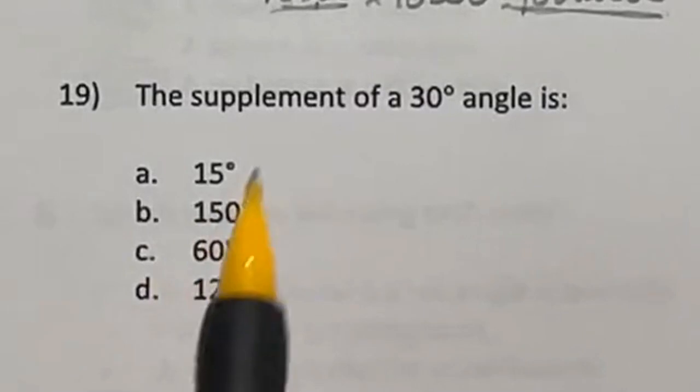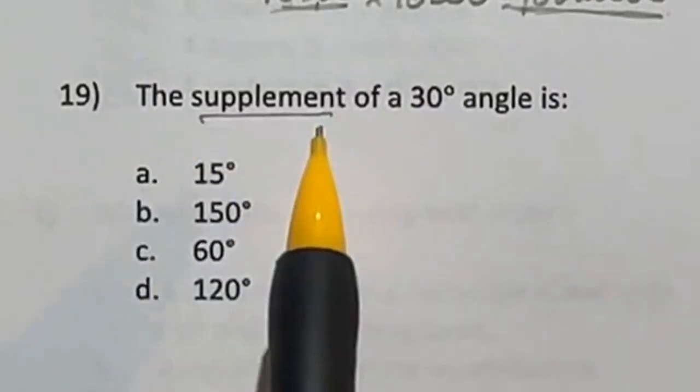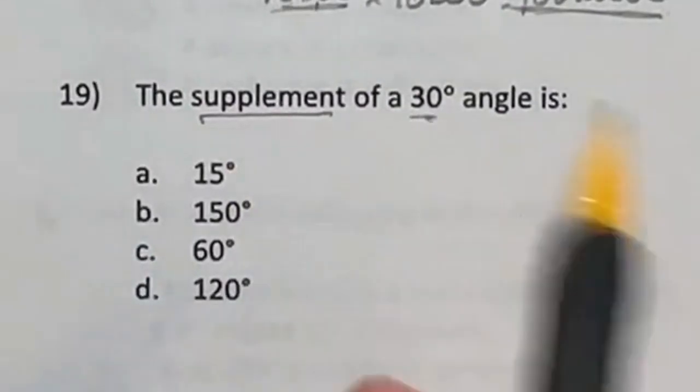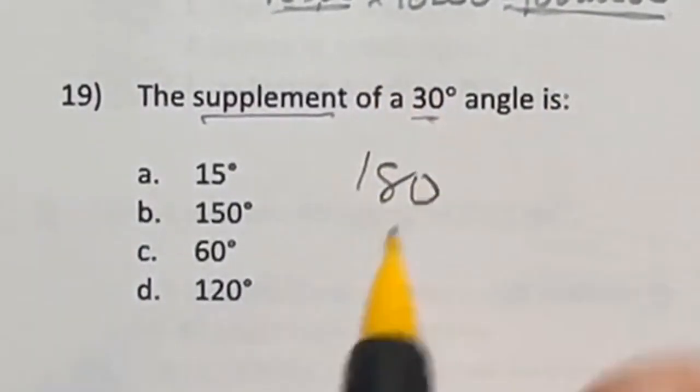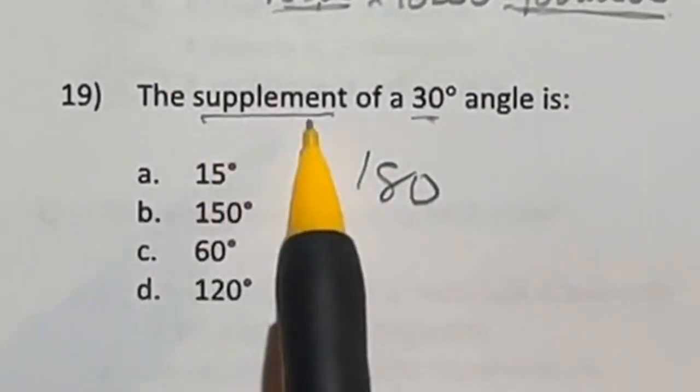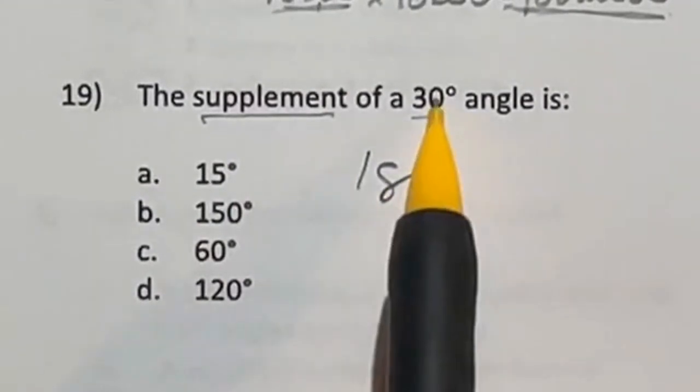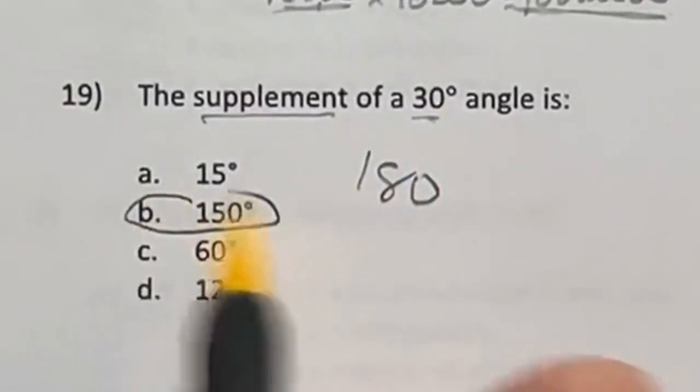So there are actually two types of definitions like this. There's complementary and supplementary. So supplementary means that the two angles add to 180, whereas complementary means that they add to 90. So in this case, supplementary, we're looking for the supplement of it, 30 plus what gives me 180? Well, 180 minus 30 is 150. So our answer here is B.